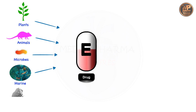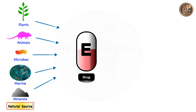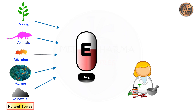We can also get drugs from marine sources — from sea and ocean we can get various algae which are used as drugs. We can also get drugs from mineral sources like rocks and soils. If you look at these five sources, they are all from nature, so we can group them into a single class called natural sources.